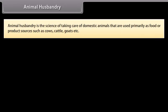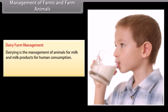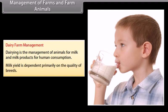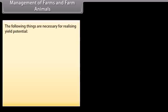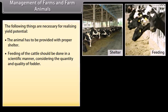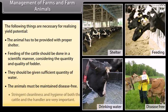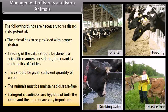Animal husbandry is the science of taking care of domestic animals that are used primarily as food or product sources, such as cows, cattle, goats, etc. Dairy farm management: dairy is the management of animals for milk and milk products for human consumption. Milk yield is dependent primarily on the quality of breed. The animal has to be provided with proper shelter, feeding of the cattle should be done in a scientific manner considering the quantity and quality of fodder, and they should be given sufficient quantity of water.